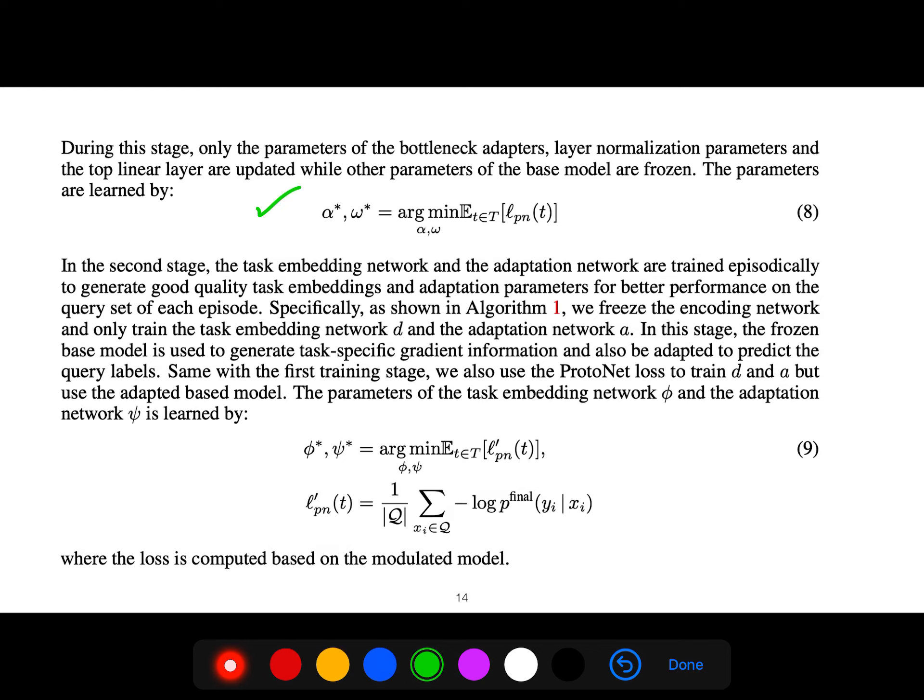In the second stage, the task embedding network and the adaptation network are trained episodically to generate good quality task embeddings and adaptation parameters for better performance on the query set of each episode. Specifically, we freeze the encoding network and only train the task embedding network and the adaptation network. In this stage, the frozen base model is used to generate task-specific gradient information and also be adapted to predict the query labels. Same with the first training stage, we also use ProtoNet loss to train D and A, but use the adapted base model. The parameters of the task embedding network phi and the adaptation network psi are learned like this, and this loss is based on the modulated model.